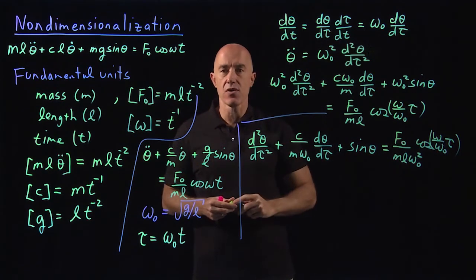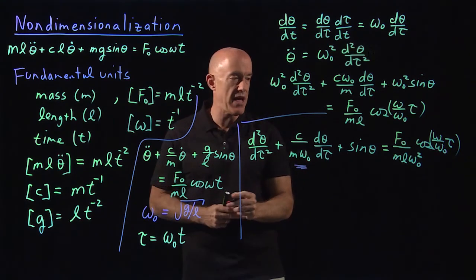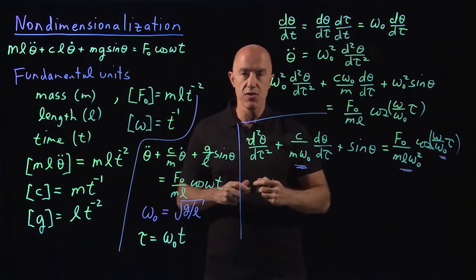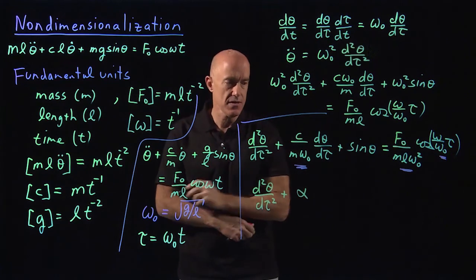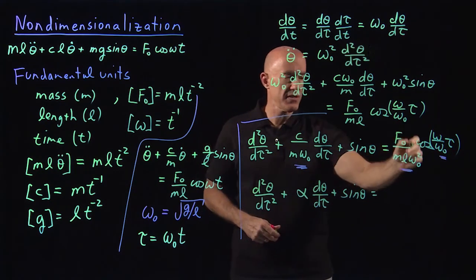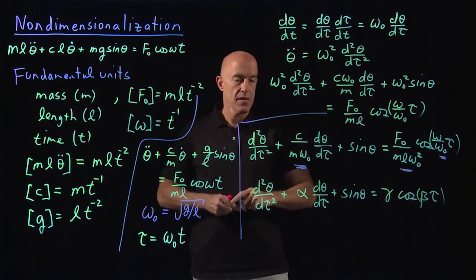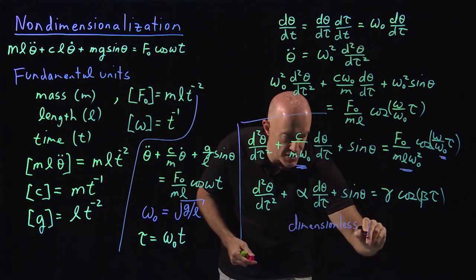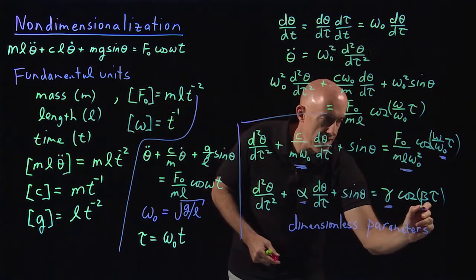That's our dimensionless equation. There are now groupings of dimensional parameters: c/(m·ω₀), f₀/(m·l·ω₀²), and ω/ω₀. We can write this equation as: d²θ/dτ² plus α·(dθ/dτ) plus sin(θ) equals γ·cos(β·τ), where α = c/(m·ω₀), γ = f₀/(m·l·ω₀²), and β = ω/ω₀. These are called dimensionless parameters.